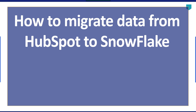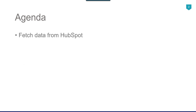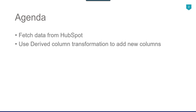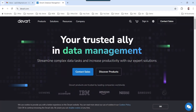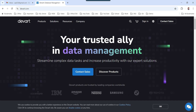Hi friends, my name is Akhil Ahmad and in this video tutorial I will show you how to migrate data from HubSpot to Snowflake. The agenda is: first we will fetch data from HubSpot, then we will use the derived column transformation to add new columns into the data flow, and then we'll insert the data into Snowflake. We will be using the SSIS data flow components from DevArt.